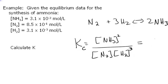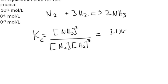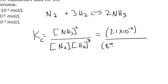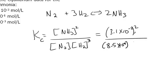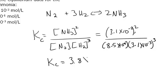Plugging in the equilibrium concentration values: KC equals 3.1×10⁻² raised to the second power, divided by 8.5×10⁻¹ raised to the first power, divided by 3.1×10⁻³ raised to the third power. When you put those numbers into your calculator, the value for KC is 3.8×10⁴.